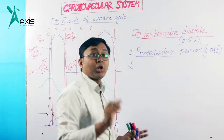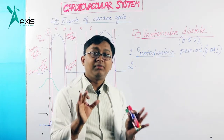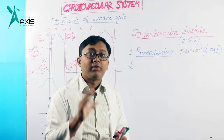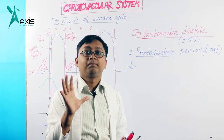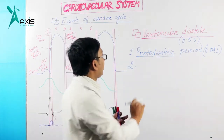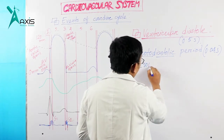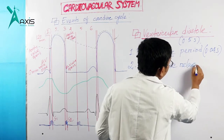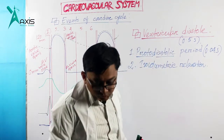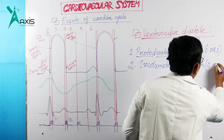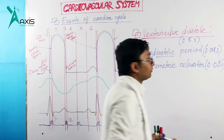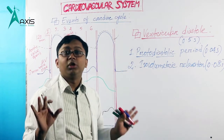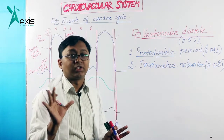After the aortic valve closes, all valves are closed — both aortic and AV valves. The ventricle is now relaxed. This phase is called isovolumetric relaxation. It is about 0.08 seconds. Because all valves are closed, no volume changes occur and the ventricle relaxes.